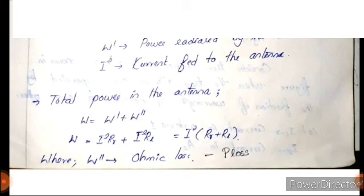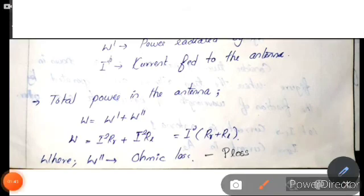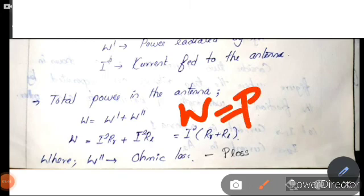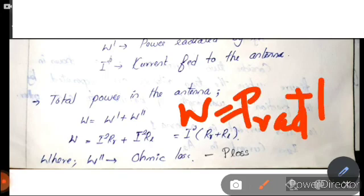The total power can be written as W equal to P-rad plus P-loss, where P-rad is the radiated power and P-loss is the power loss.